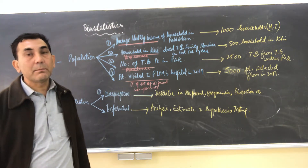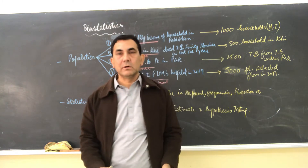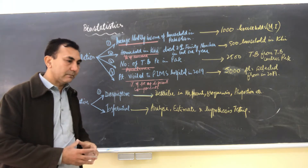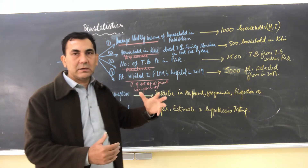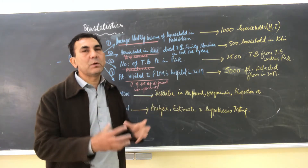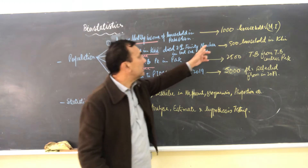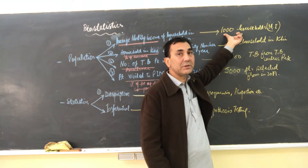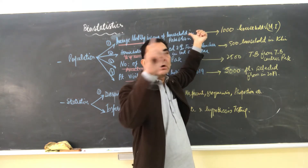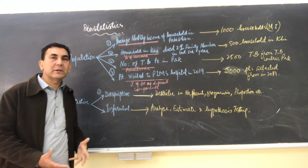If he has selected one thousand households from all over Pakistan, proportionally distributed across provinces, and uses those to see the average monthly income — these selected one thousand households from the entire population of Pakistan represent the sample size.